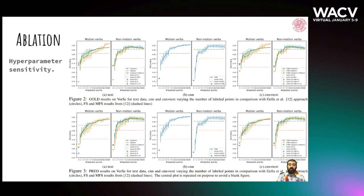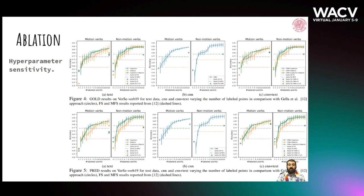We also report ablation studies to check performances in a fine-grained analysis on the number of labelled points, our free parameter. We consider VERSE and VERSE 19 datasets, and in both tests the results were the same: after a couple of labelled points, we were able to outperform the unsupervised model, while after six to eight labelled points, we outperform also the fully supervised ones.